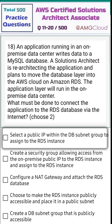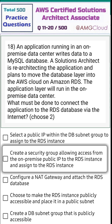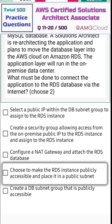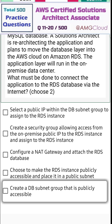Option one: select a public IP within the DB subnet group to assign to the RDS instance. Option two: create a security group allowing access from the on-premises public IP to the RDS instance and assign it to the RDS instance. Option three: configure an internet gateway and attach the RDS database. Option four: choose to make the RDS instance publicly accessible and place it in a public subnet. Option five: create a DB subnet group that is publicly accessible.